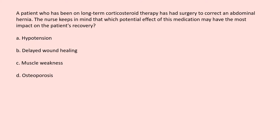A patient who has been on long-term corticosteroid therapy has had surgery to correct an abdominal hernia. The nurse keeps in mind that which potential effect of this medication may have the most impact on the patient's recovery? A. Hypotension. B. Delayed wound healing. C. Muscle weakness. D. Osteoporosis.